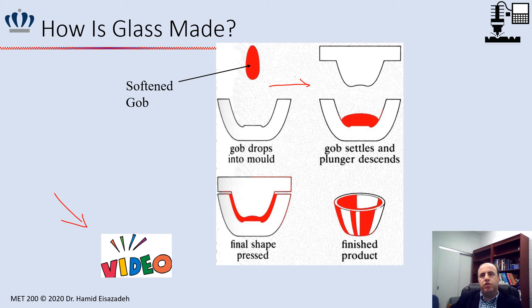This is a schematic of the glass production process: the raw materials are decomposed and heated to a certain temperature, forming a molten state called a 'gob.' It is then settled into a mold, and a plunger descends to press the molten glass into the desired shape — this pressed form is the finished product.